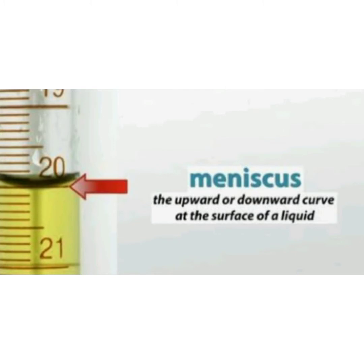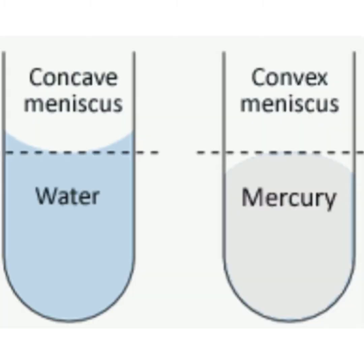After a liquid has been poured into a measuring cylinder, a curve can be seen on the surface of the liquid. This curve is called the meniscus. Water forms a concave meniscus and mercury forms a convex meniscus. In the concave meniscus the reading is taken at the bottom; in the convex meniscus the reading is taken at the top.